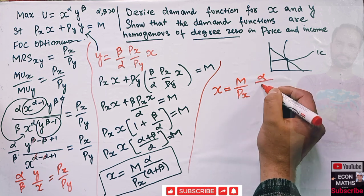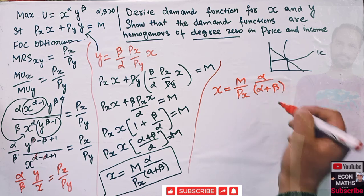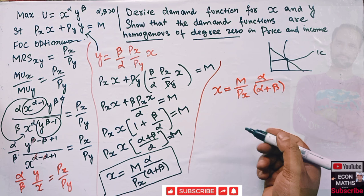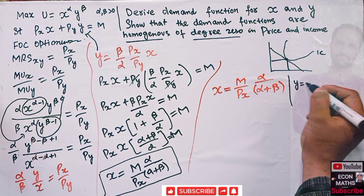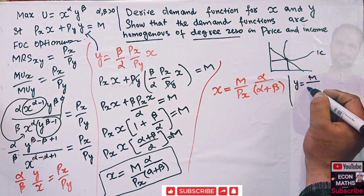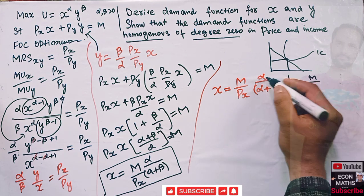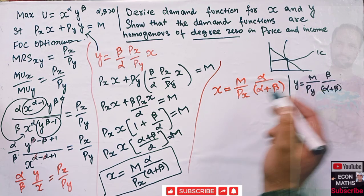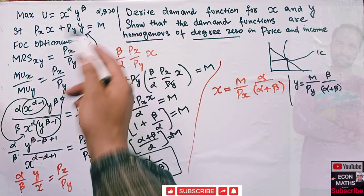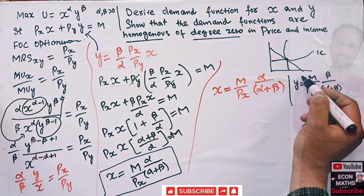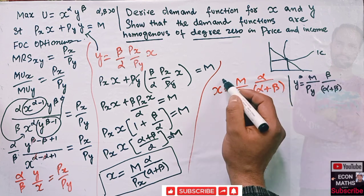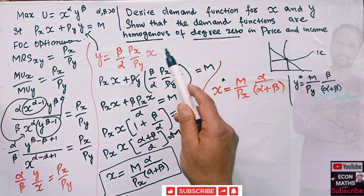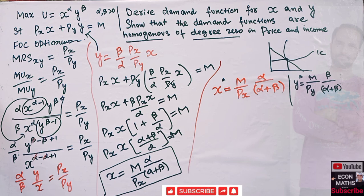So the demand function for x is: x* = (alpha / (alpha + beta)) * (m / Px). Similarly, we can find the demand function for y — I will not show the full derivation as it would get lengthy — which gives y* = (beta / (alpha + beta)) * (m / Py). Just plug the value of y back into the budget constraint to get the optimal value of y. So we now have both demand functions.